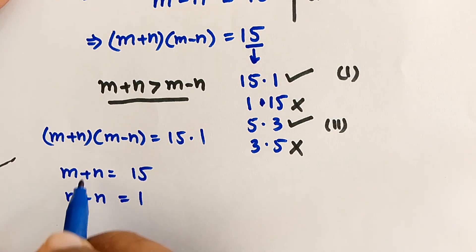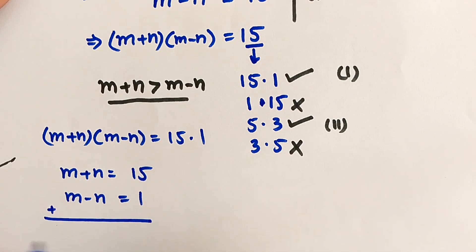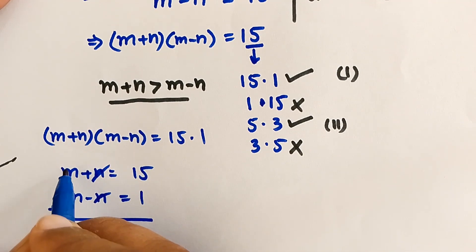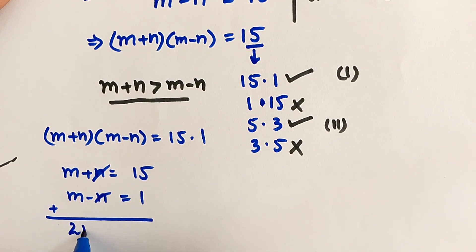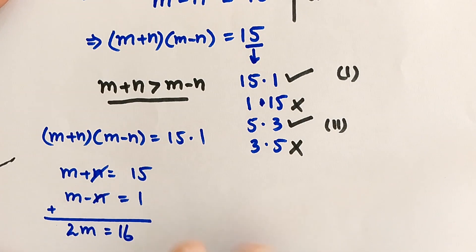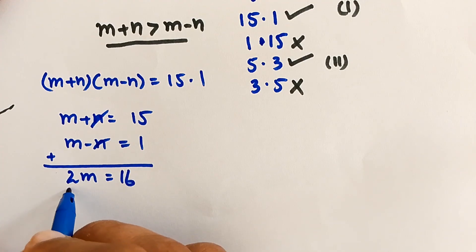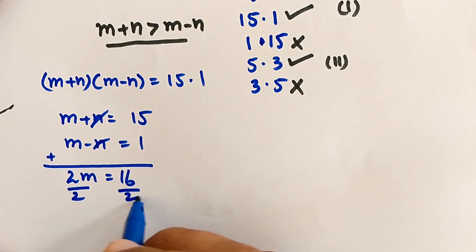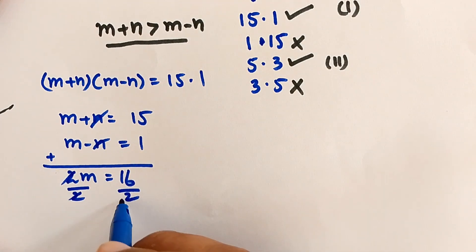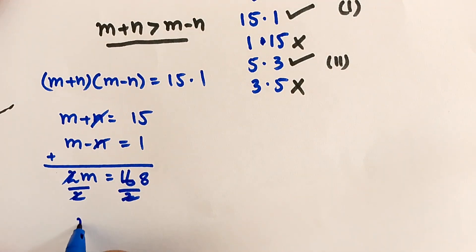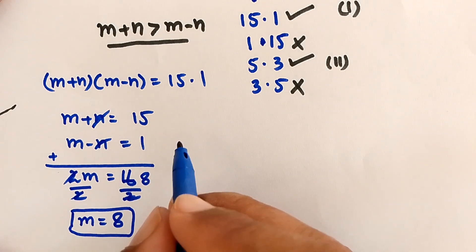To find m, we add the two equations. The n terms cancel, giving 2m equals 16. Dividing both sides by 2, we get m is equal to 8.